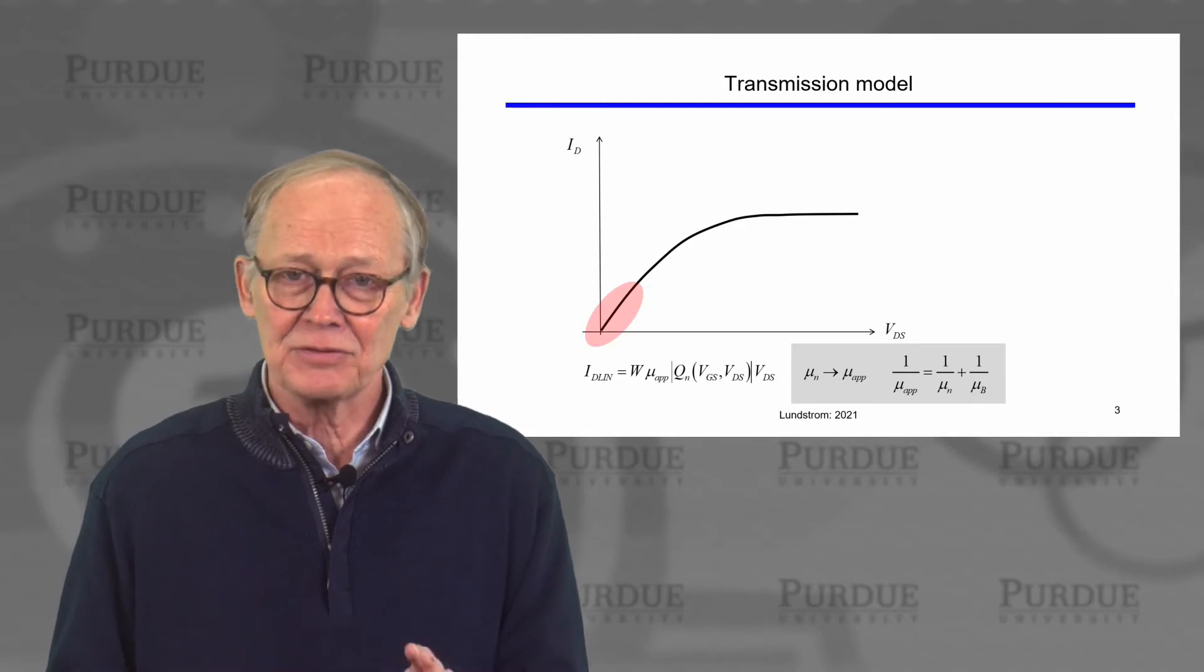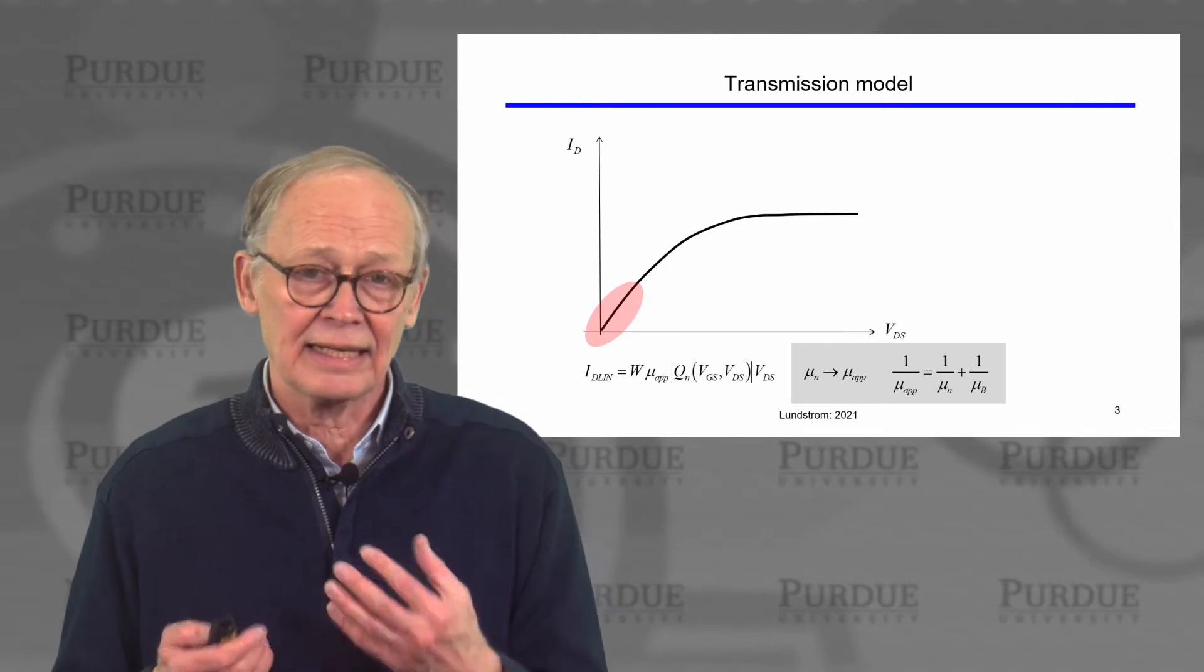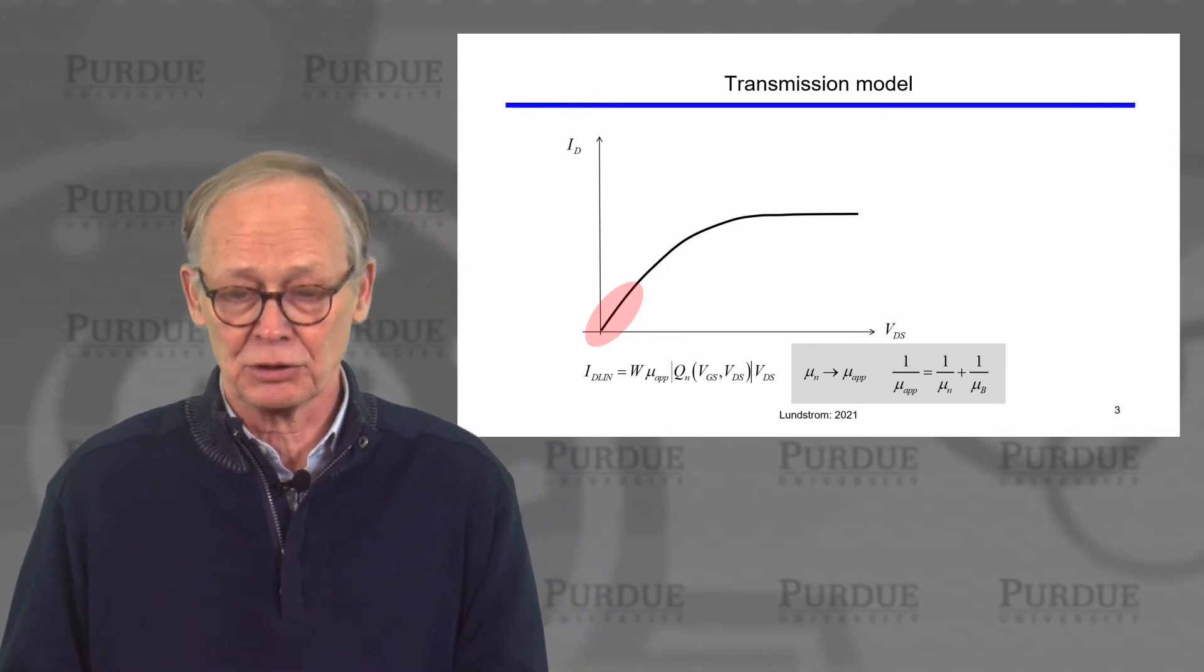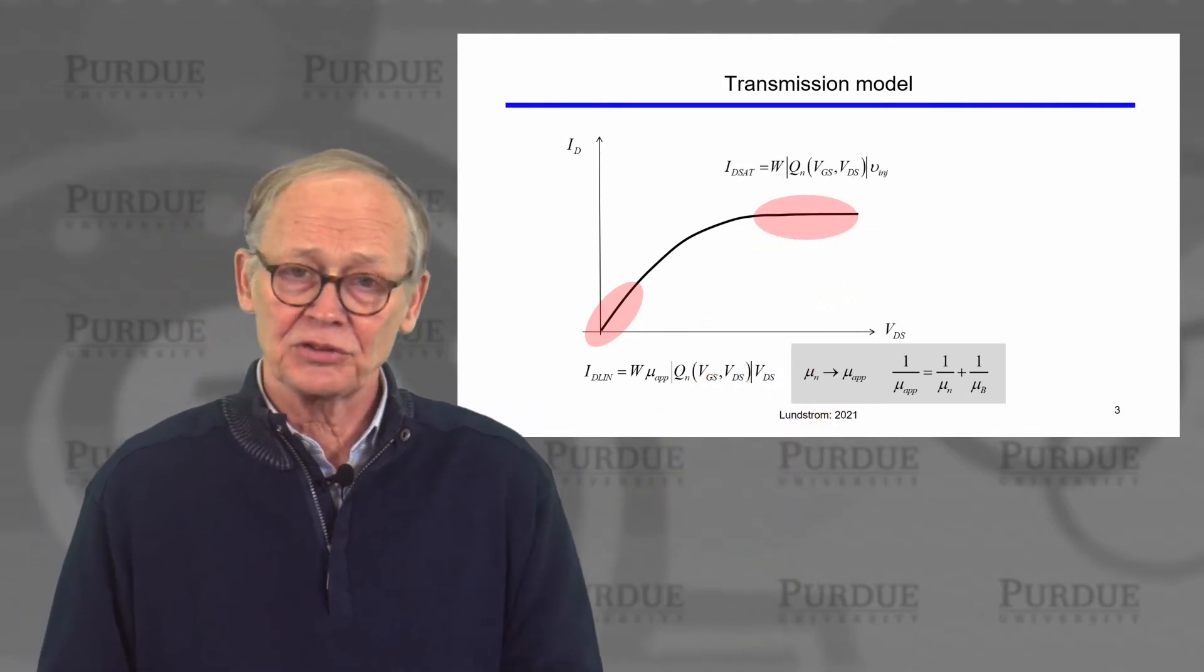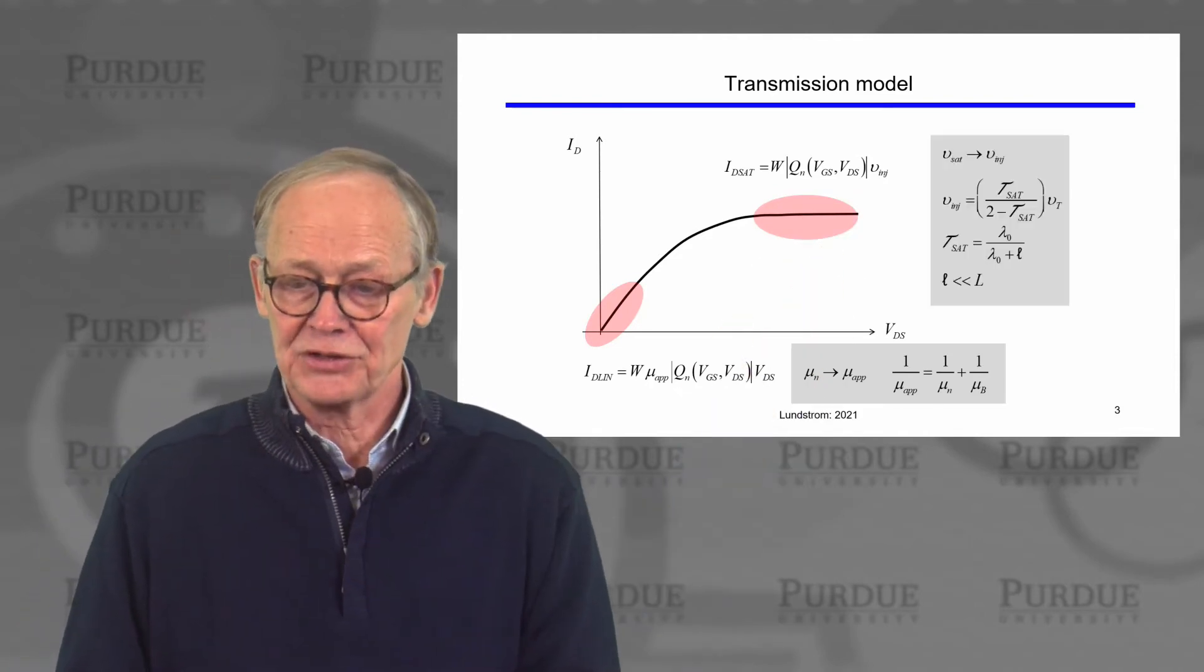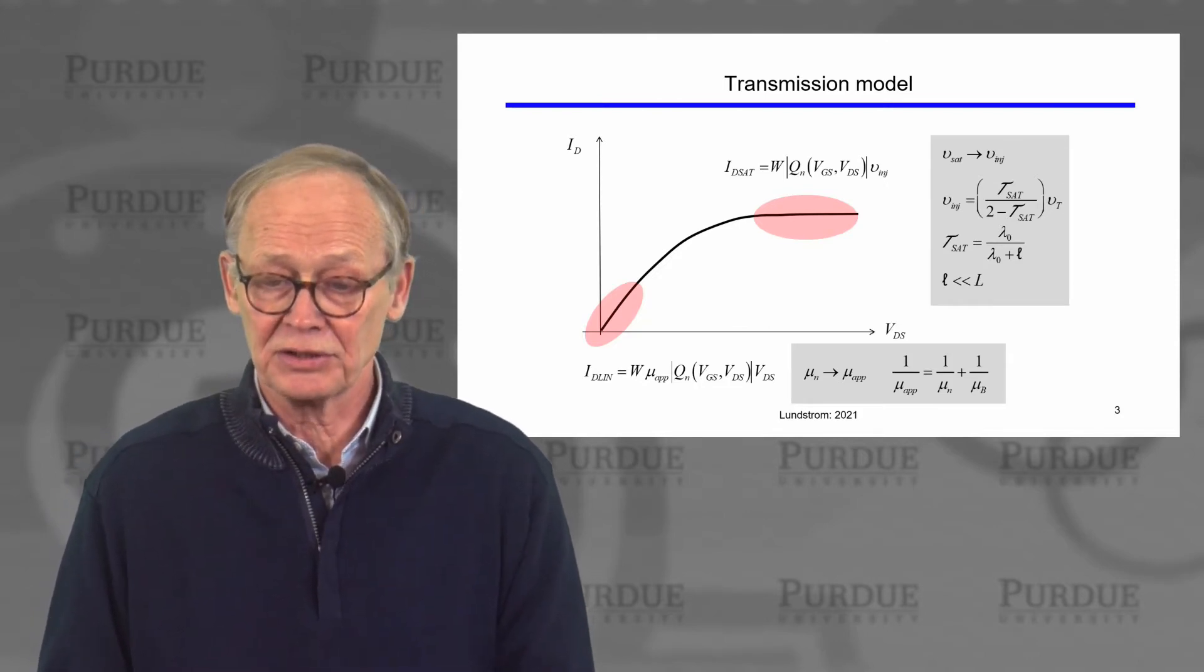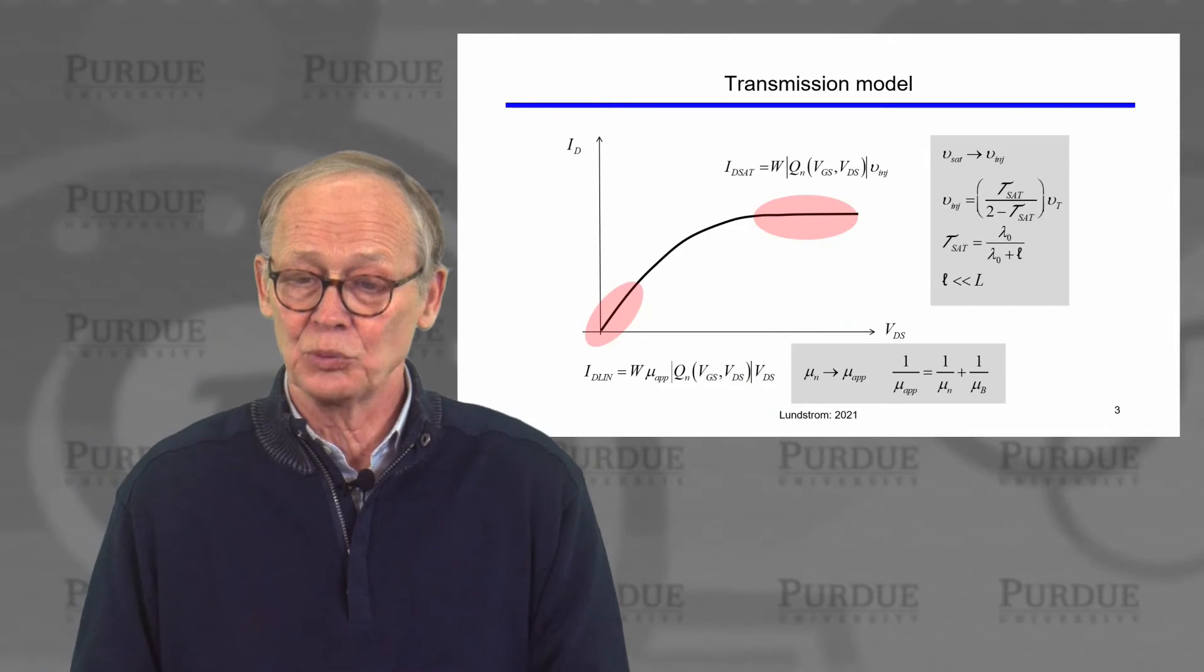It's not a fudge factor. It's not something that we just empirically adjust to fit data. It has a clear, simple, clear physical interpretation. Our saturated current looks just like the traditional model, but the velocity has a different interpretation. The velocity is related to the transmission under saturated conditions and involves the unidirectional thermal velocity as well.